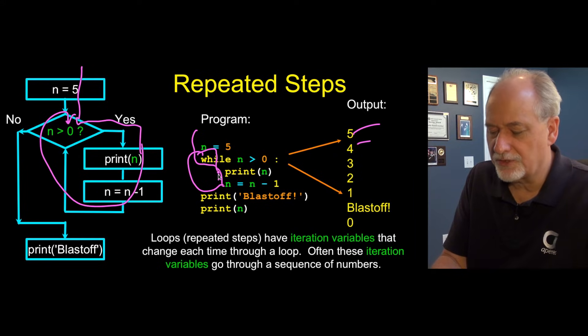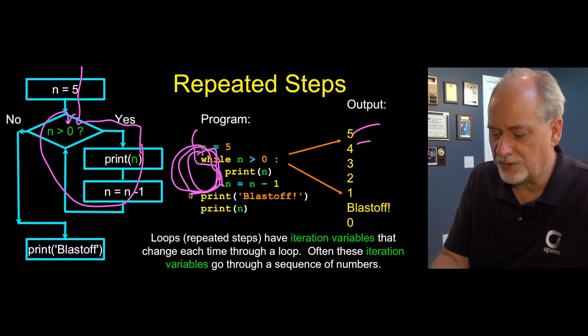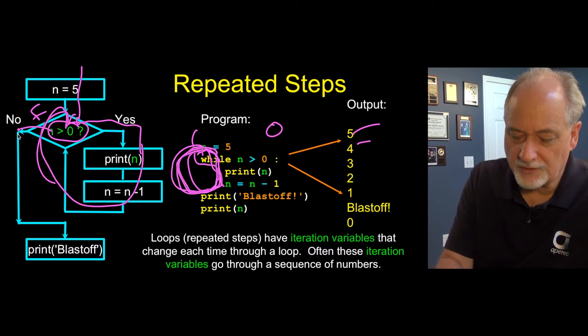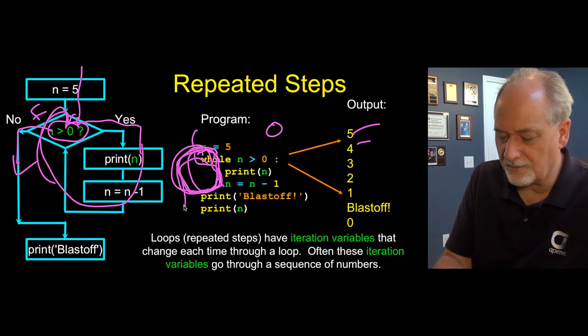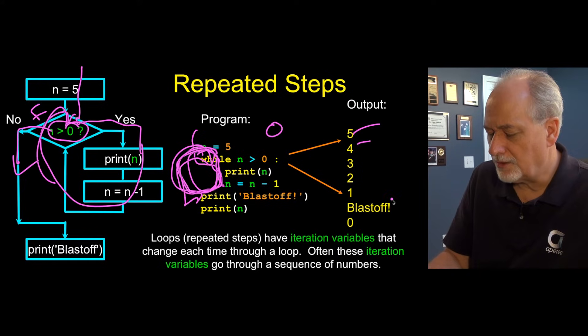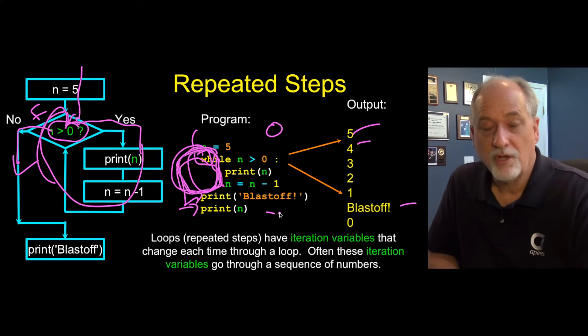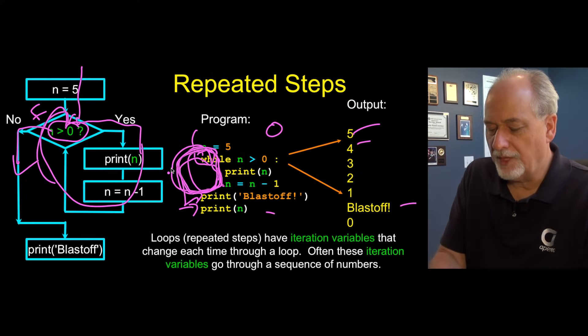Then it prints out four, subtracts it again, checks. Prints three, subtracts it again. Prints two, subtracts it again. Prints one, subtracts it again. Now n is zero, and so it comes back up. Is this question has now become false. So it's going to take the exit. So it's going to come down and run this line right here. Then it prints blast off. And we can kind of print out the residual value of n. Just to sort of prove to ourselves that it ran until n was no longer greater than zero. And then zero was the final value for n.